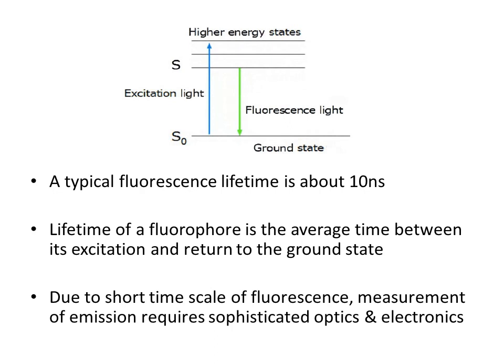The lifetime of fluorescence is about 10 nanoseconds — a very short lifetime. The lifetime of a fluorophore is the average time between its excitation and return to the ground state. Any substance exhibiting the phenomenon of fluorescence is called a fluorophore. Because the time scale is very short in fluorescence, measurement of emission requires sophisticated optics and electronics.